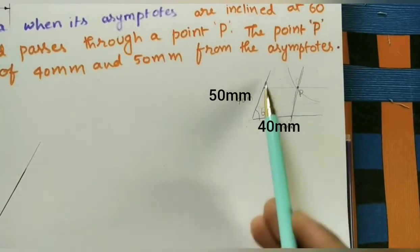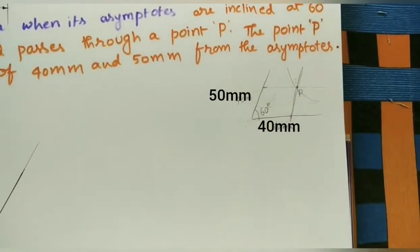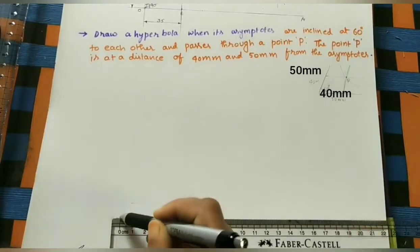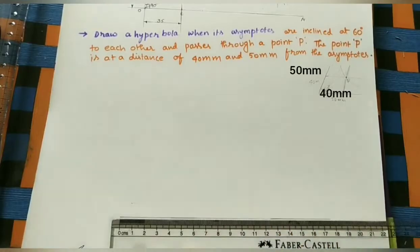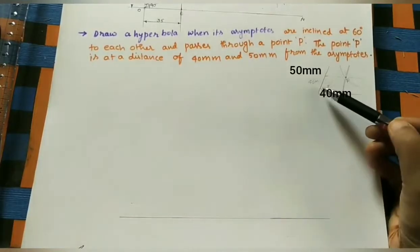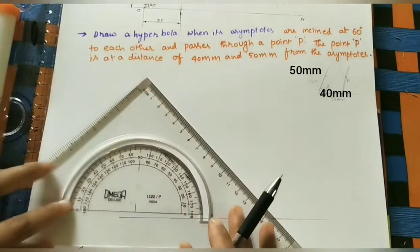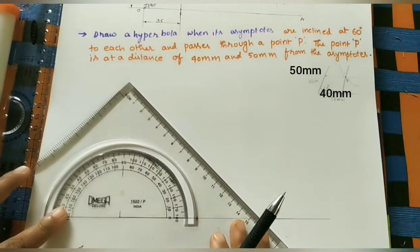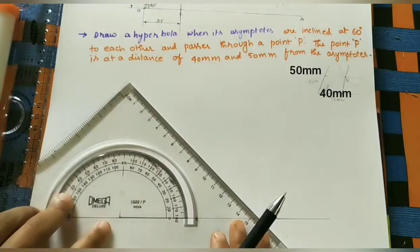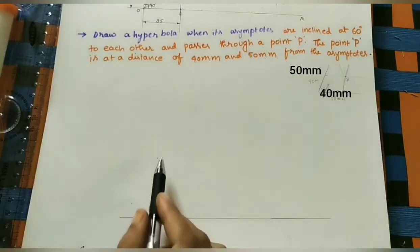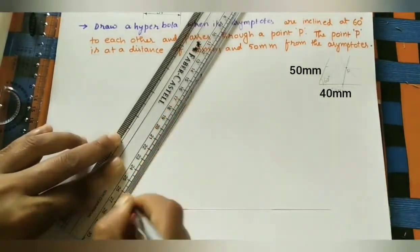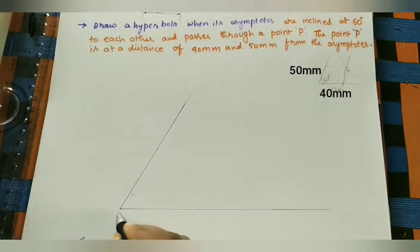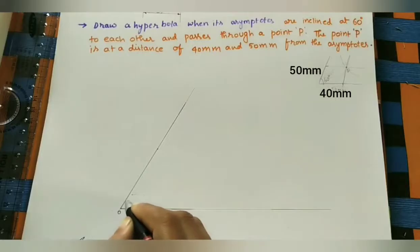Let us start. First, we draw the asymptotes making 60 degrees. Draw a horizontal line of any length, then take a 60-degree inclined line. Join these to get the intersection point O, so the two asymptotes are making 60 degrees with each other.